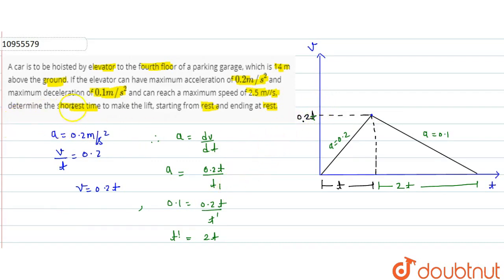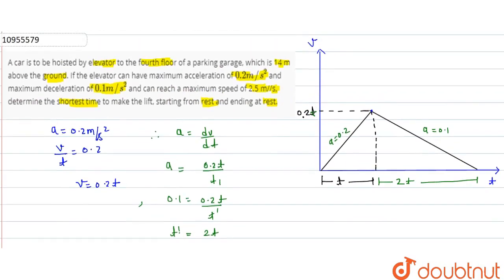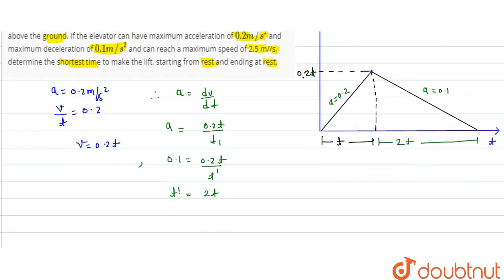Now we have asked to determine the shortest time to make the lift starting from rest to rest. So we know that displacement is the area under the curve. Area under the velocity time graph gives displacement.